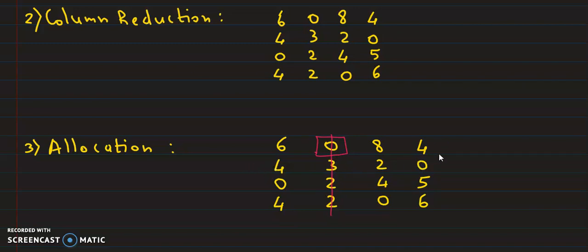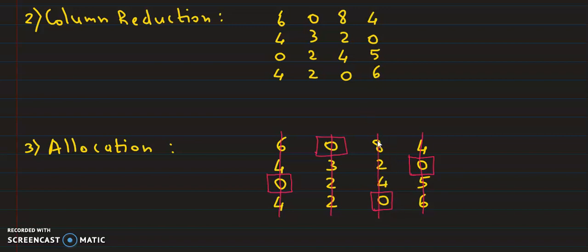Then we go to the second row. Again, this is a single zero row, so we draw a vertical line. Up and down there is no other zero. The third row is also a single zero row — we make a vertical line here, and there is no zero for canceling. In the last row, we also have a single zero, so we draw a vertical line. Basically, we have 4 assignments, and the order of this matrix is 4 by 4, so we have exactly 4 assignments.